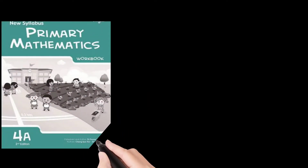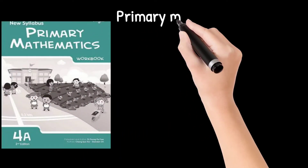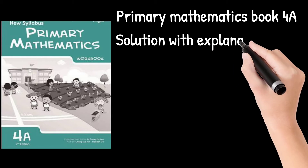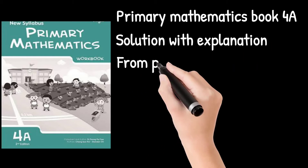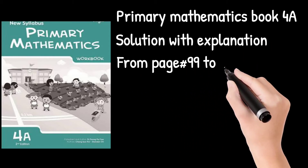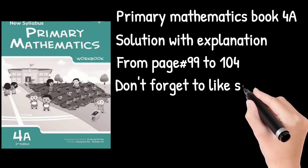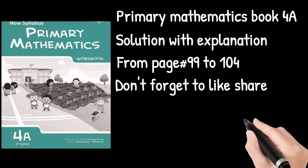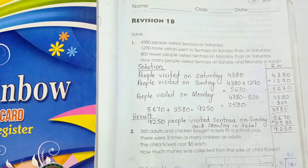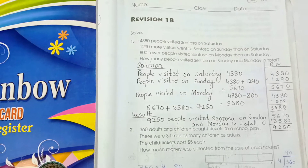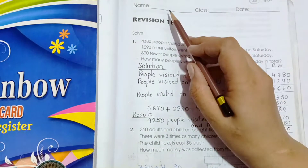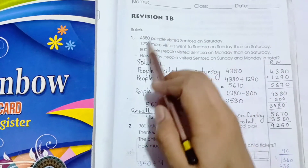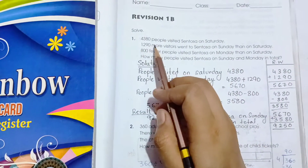Hi everyone, today we are going to solve Primary Mathematics Book 4A from page number 99 to 104, Revision 1B. We are going to start page number 99 — write your name, class, and date, Revision 1B.